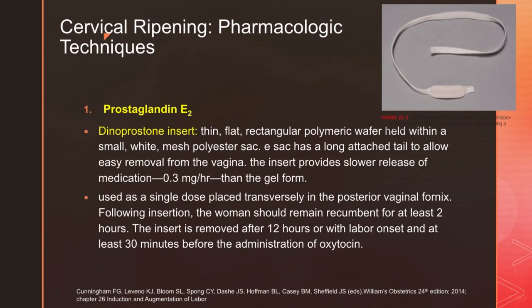The dinoprostone insert is a thin, flat, rectangular polymeric wafer held within a small white mesh polyester sac. The sac has a long attached tail to allow easy removal from the vagina, and the insert provides a slow release of medication at 0.3 mg per hour, slower than the gel form. It is used as a single dose placed transversely in the posterior vaginal fornix; following insertion, the woman should remain recumbent for at least two hours. The insert is removed after 12 hours or with labor onset, and at least 30 minutes before administration of oxytocin.